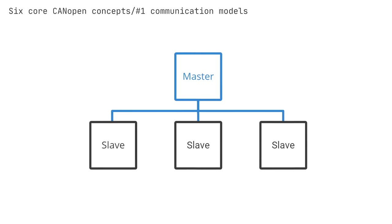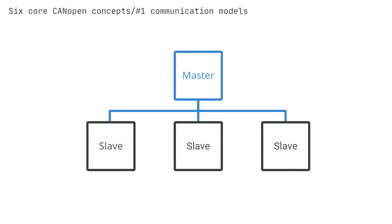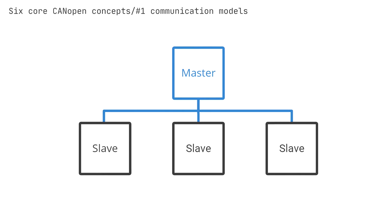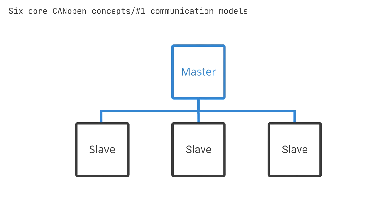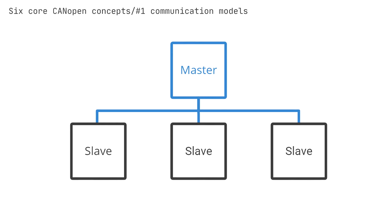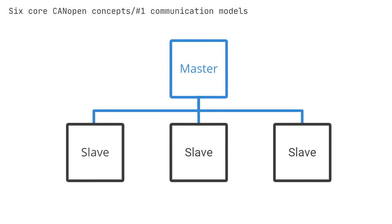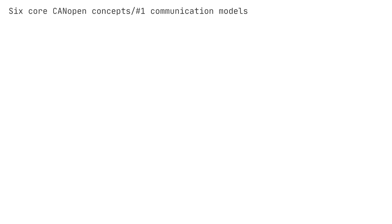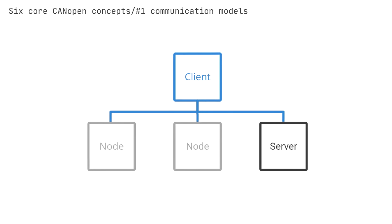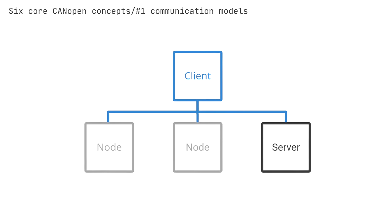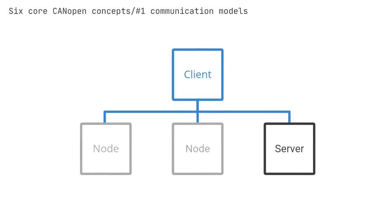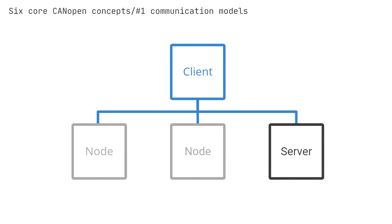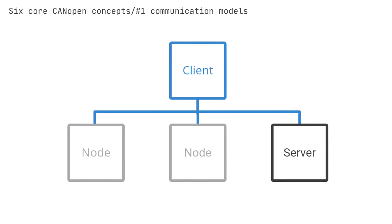Number one: master or slave. One node, for example the control interface, acts as application master or host controller. It requests data from the slaves, for example servo motors. This process is used in diagnostics or state management. There can be zero to 127 slaves in standard applications. Note that in a single CANopen network, there can be different host controllers sharing the same data link layer. Number two: client or server — a client sends a data request to a server, which replies with the requested data. Used when an application master needs data from the OD of a slave. A read from a server is an upload, while a write is a download.